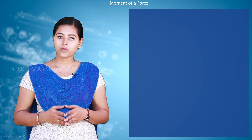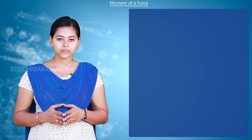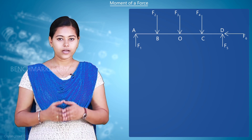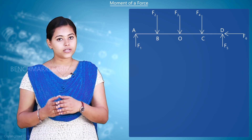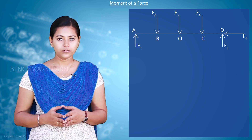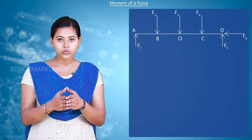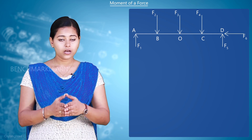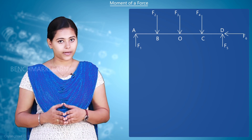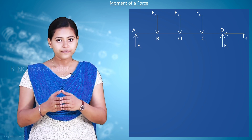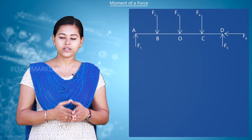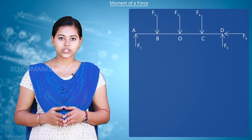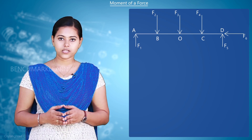Consider a beam as shown. We have forces F1 and F5 acting upwards at points A and D. Forces F2, F3, and F4 are acting downwards at points B, O, and C respectively. Force F6 is acting towards the left at point D. We will now find the magnitude and direction of the moments created by all these forces.